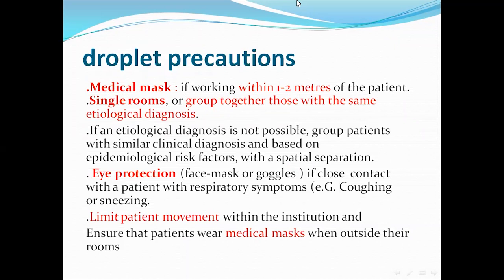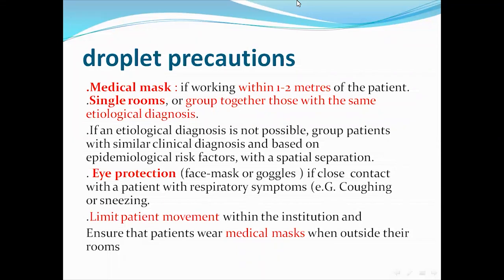Every patient with a suspected case of novel coronavirus requires droplet and contact precautions. Droplet precautions include: a medical mask for healthcare staff working within one to two meters of the patient, placement in a single room or with patients of similar diagnosis, eye protection such as face shield or goggles, and limiting patient movement — ensuring the patient wears a medical mask if leaving the room.